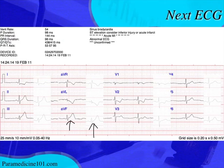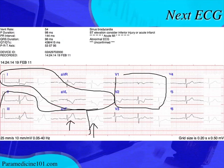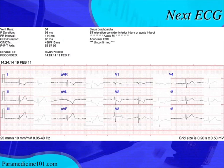So to summarize: this is an inferior wall MI with reciprocal changes in the high lateral leads, probable posterior wall extension, and likely a right ventricular infarct as well. That's it for this case — I'll see you on the next one.